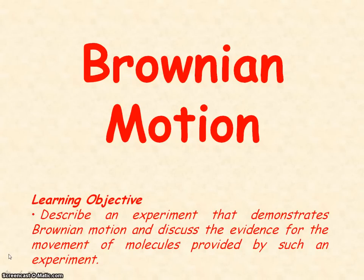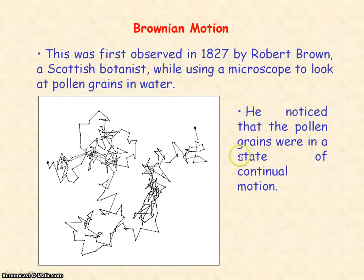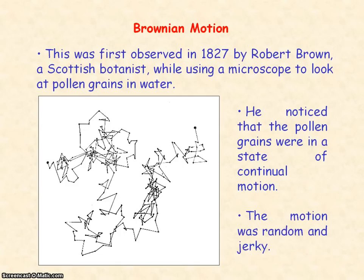We are going to be looking at Brownian motion. It is named after the botanist Robert Brown who viewed under a microscope pollen grains in water. He observed that the pollen grains were in a constant state of motion, and that motion was random — in different directions and jerky, so continually changing directions.